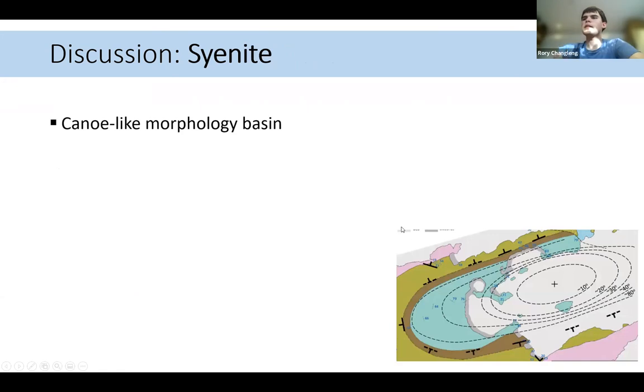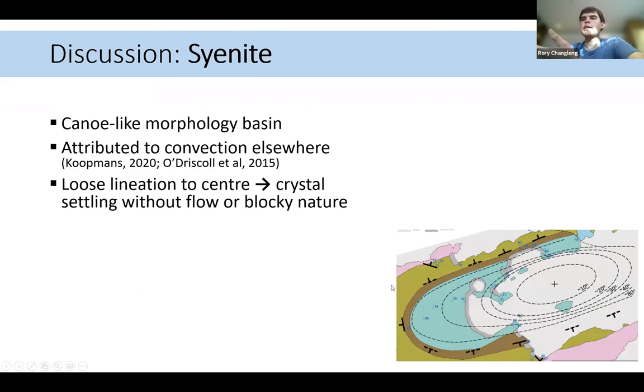If you look now finally at syenite in the center, it has this canoe like basin morphology. And so this has been attributed elsewhere to convection. And so this may be implied here. But also, when you have convection, you often see a stronger lineation towards the center. And so crystal settling would also potentially give this. But then again, the blocky nature of the feldspars, because this is K-feldspar and not plagioclase may explain that as well.